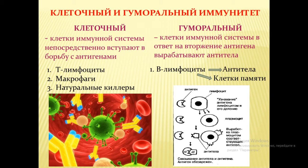B-лимфоциты вырабатывают антитела, и антитела уже контактируют с антигеном. Клеточный иммунитет — это когда непосредственно клетки иммунной системы вступают в реакцию с антигеном и разрушают его. Гуморальный иммунитет — это когда клетки вырабатывают антитела, которые встречаются с антигеном, распознают его, начинают с ним борьбу, привлекают помощников и способствуют выработке клеток памяти, позволяющих быстрее реагировать на ранее встречавшийся патоген.